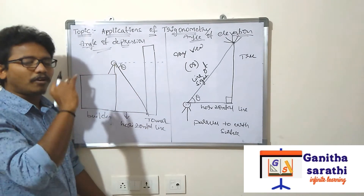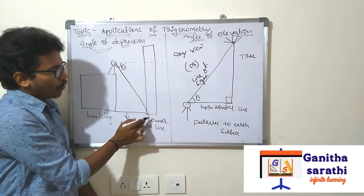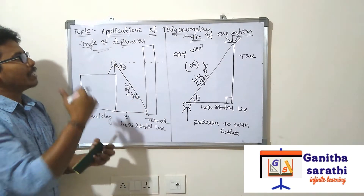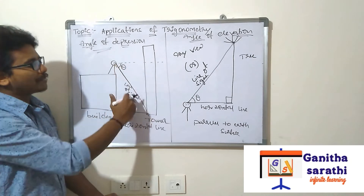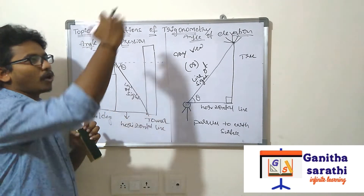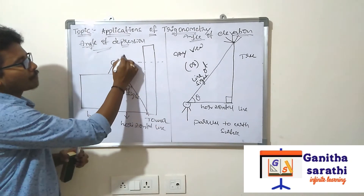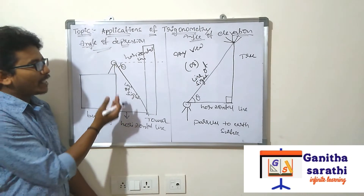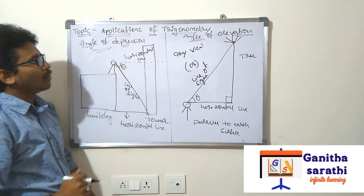The definition of line of sight remains the same. The angle between line of sight and below the horizontal line is called angle of depression. Angle of elevation means seeing the top of the object; angle of depression means seeing the bottom of the object.